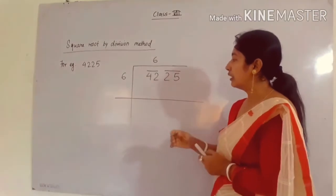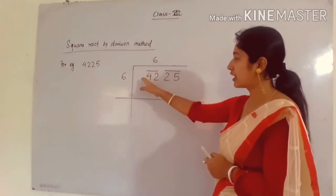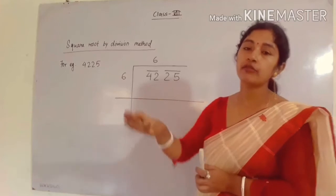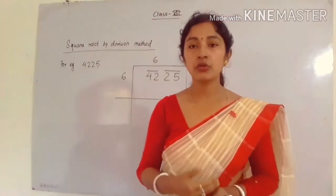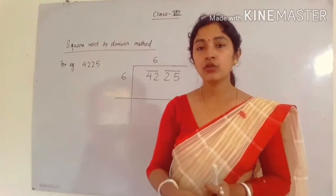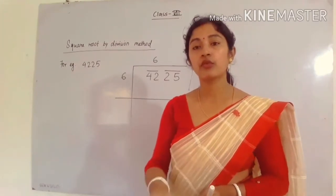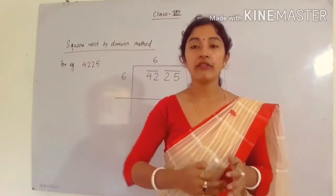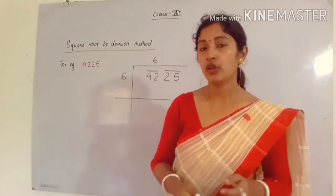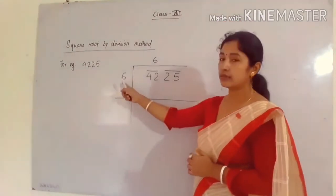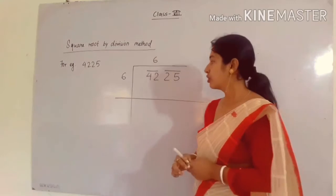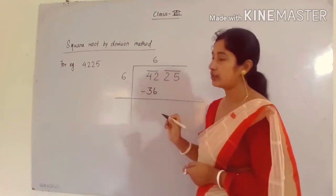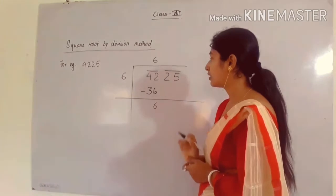Next, you have to check the first pair from the front side. The first pair is 42. You have to find a square number which is less than or equal to 42. Since 42 is not a square number, you take a number less than 42. For example, 6, because 6 × 6 = 36. Write 36 below the first pair and subtract. After subtraction I get 6, since 42 minus 36 is 6.